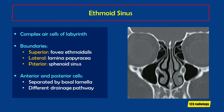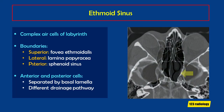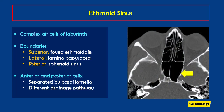The ethmoid sinuses are a complex labyrinth of air cells. They are bounded superiorly by the fovea ethmoidalis, laterally by the lamina papyracea, and posteriorly by the sphenoid sinuses. Ethmoid sinuses are made up of anterior and posterior air cells, separated by the basal lamella, and they have different drainage pathways.